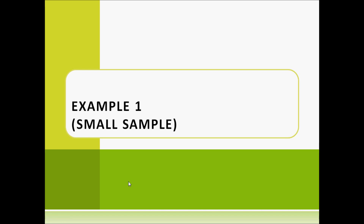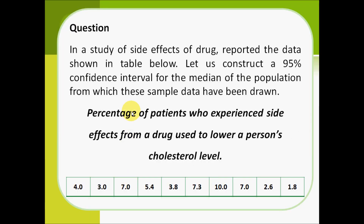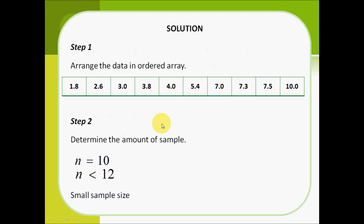Now we go to example number 1 for small sample size. This question asks us to construct a 95% confidence interval for the median of the population. The data is about the percentage of patients who experience side effects from a drug used to lower a person's cholesterol level. For step 1, arrange the data in ascending order. Step 2: we determine the number of samples, which is equal to 10. Since n is less than 12, this is a small sample size.